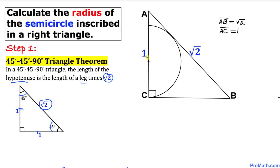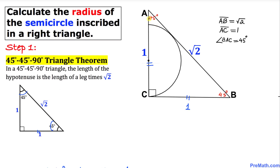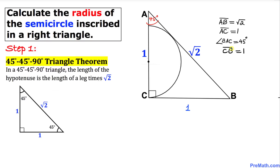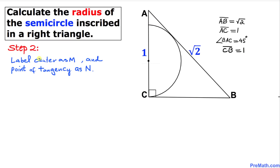Focusing on our given right triangle ABC, we can see the same scenario: if AC is 1, then AB is √2. That means this other leg, BC, is also 1, and these angles are going to be 45 degrees as well. So angle BAC is 45 degrees, and line segment CB is 1.